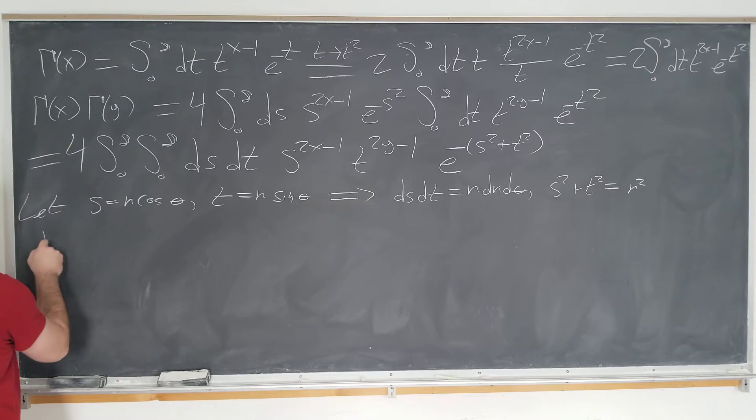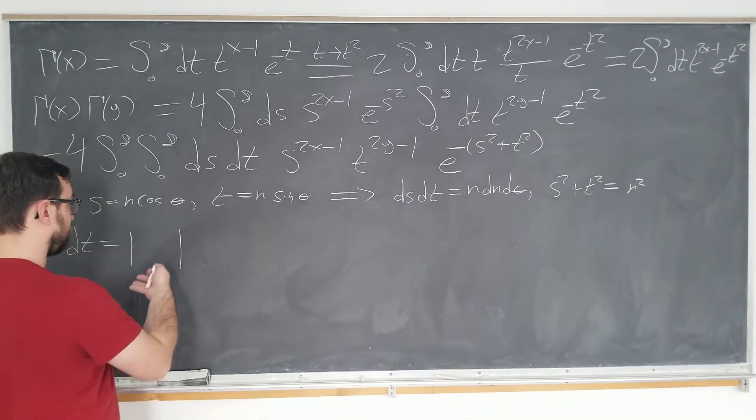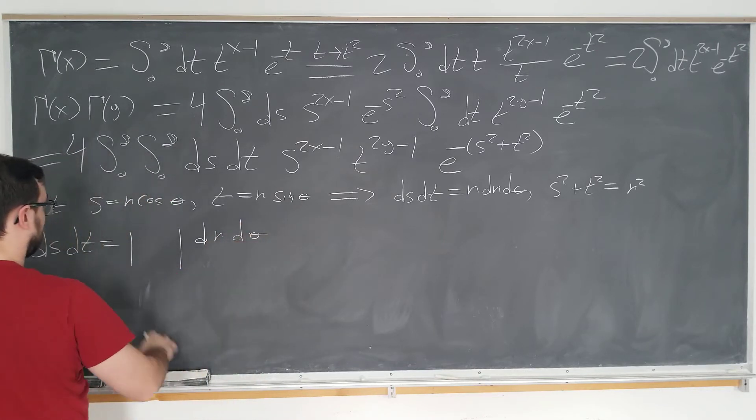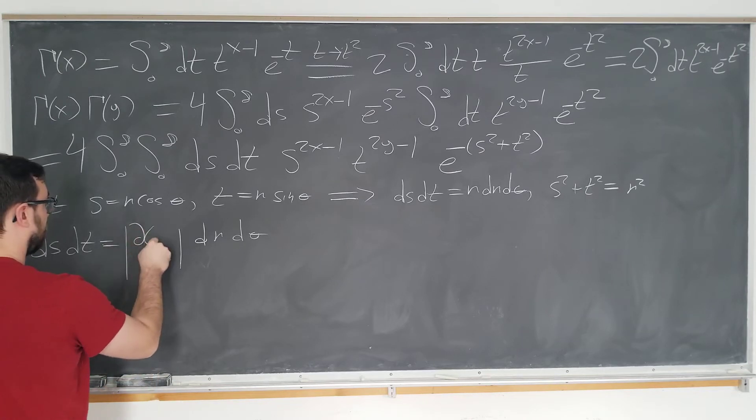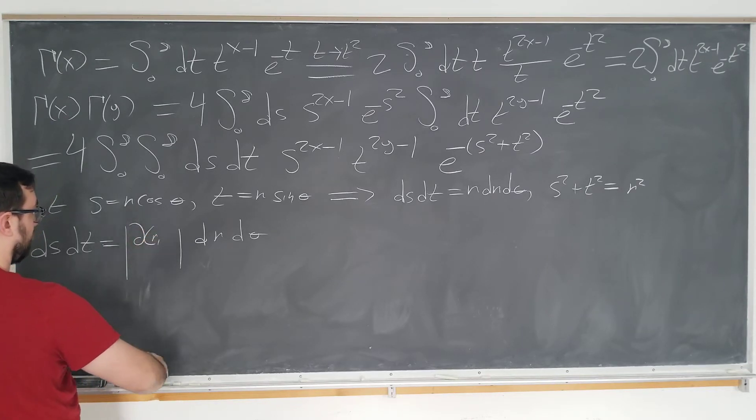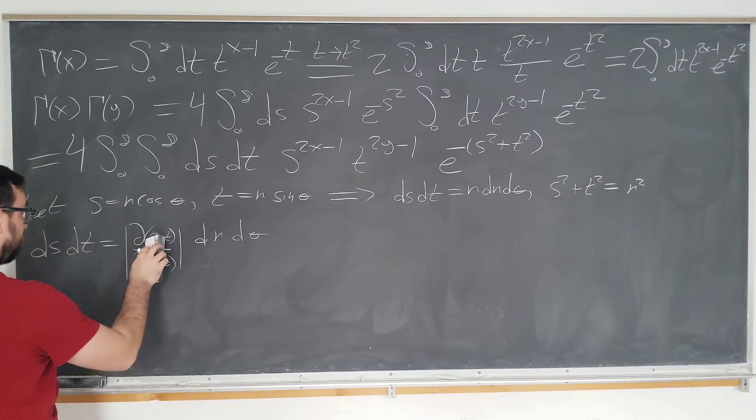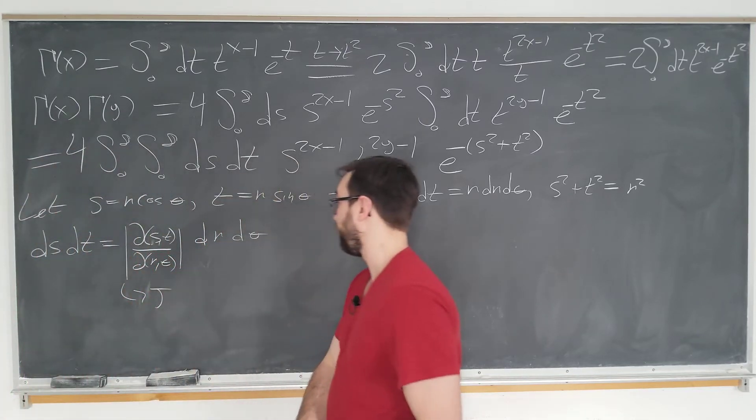Okay. So, we have ds, dt is going to be equal to the determinant of some matrix times dr d theta. And to find the matrix, we basically just want to have the differentials cancel each other. So, d st by dr theta. Sorry, that's a bit hard to read. And we're going to call this thing j for future reference, or j inverse. It doesn't matter. What does matter is, in general, this is how you derive the Jacobian matrix, at least for a two by two transformation.